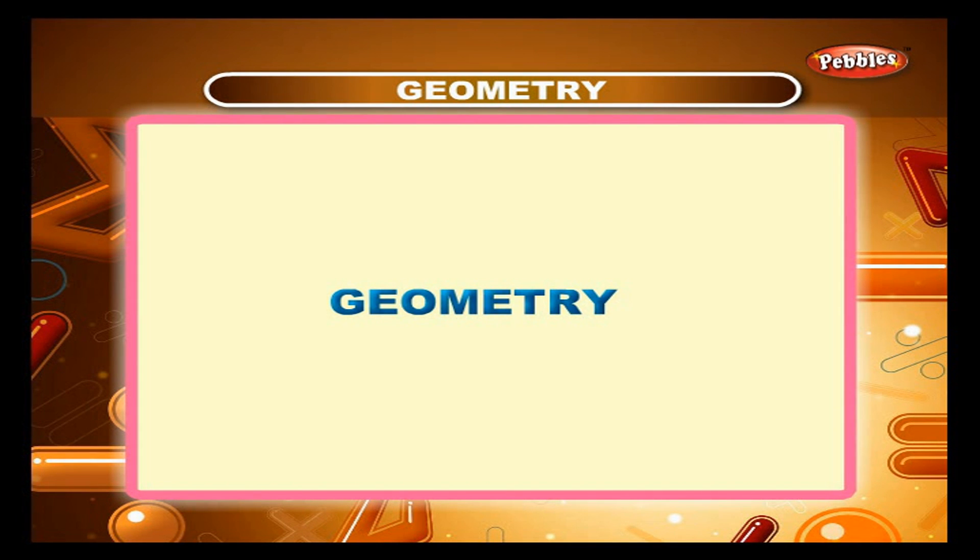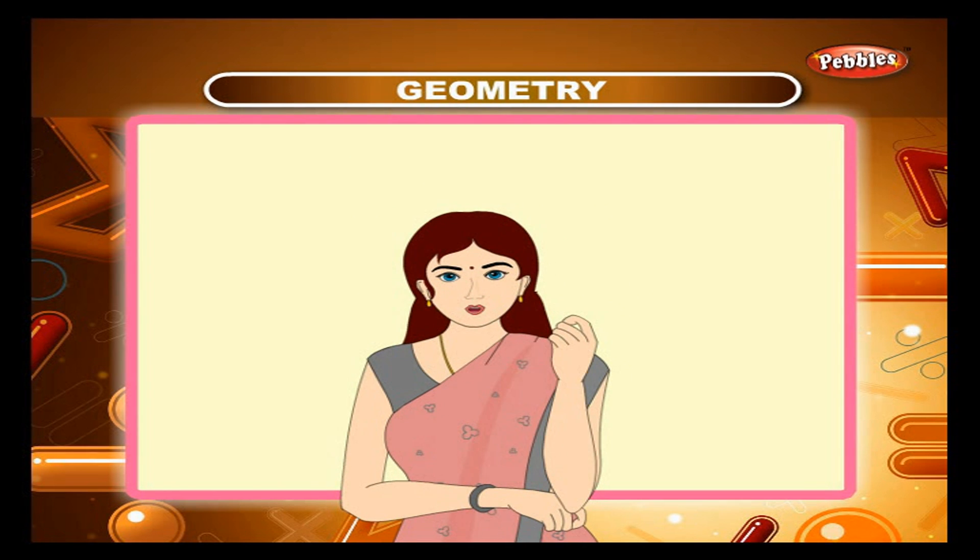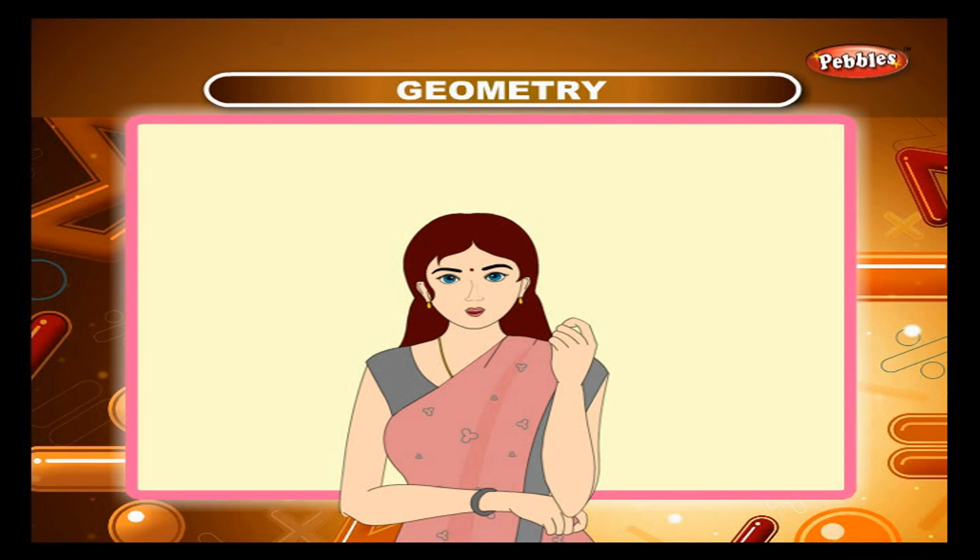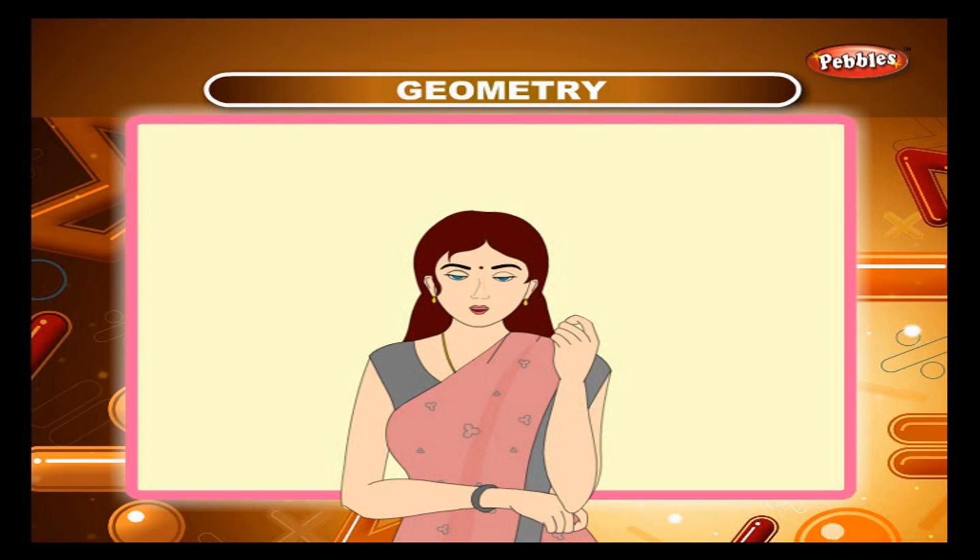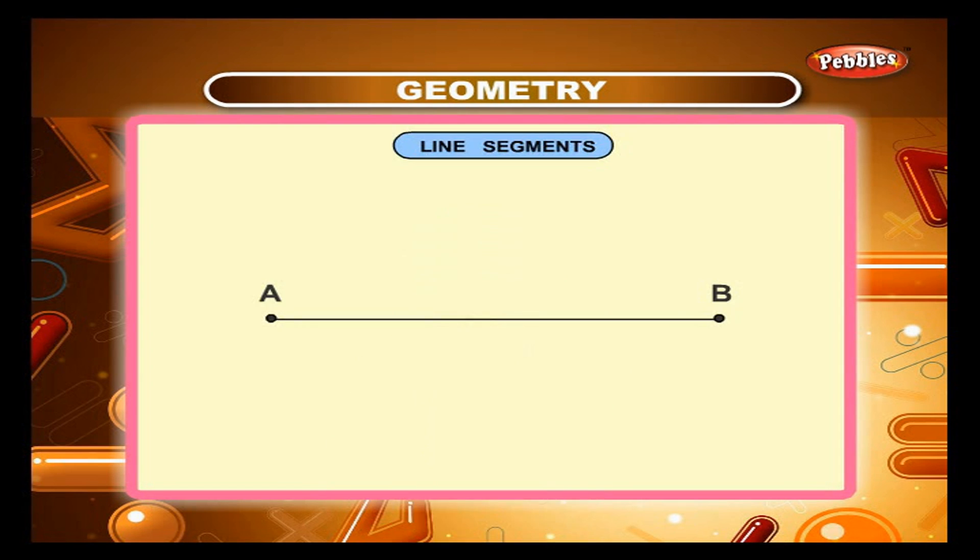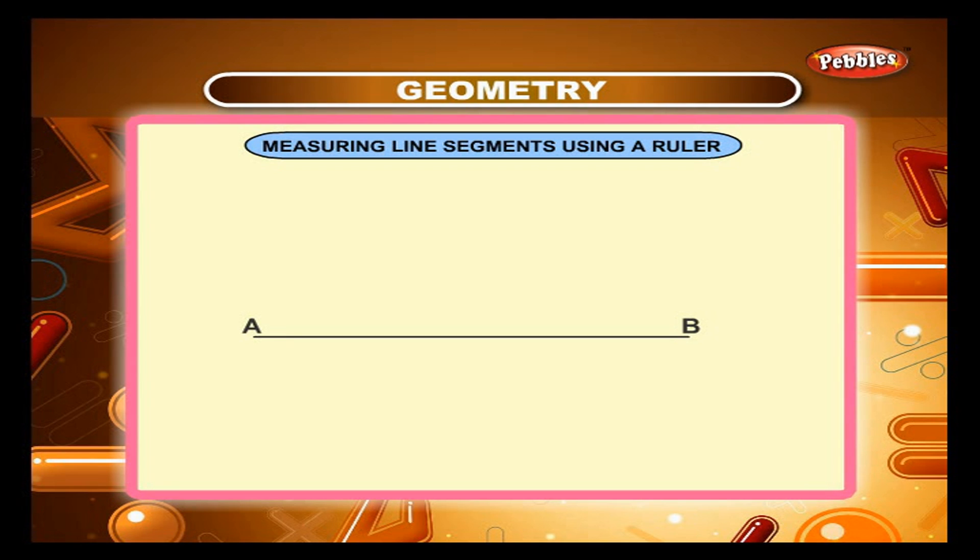Chapter 10 Geometry Line Segment. Let us recall what you have learnt about line segments. A line segment is a straight line having a beginning and an end. The line segment shown is called line segment AB or segment AB or line AB. Measuring line segments using a ruler. To measure the length of the line segment AB using a ruler, follow the steps.